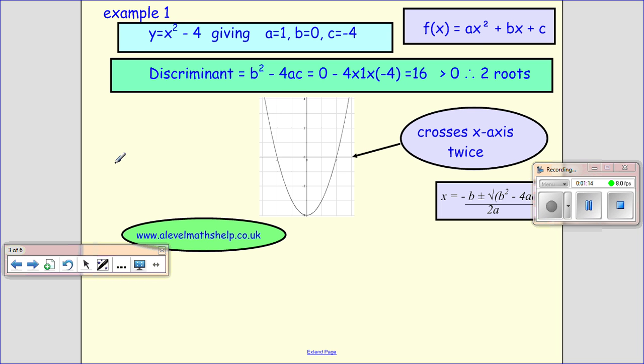Okay, so our first example, y = x² - 4. We compare it here with our quadratic function formula, and we have the values for a, b, and c. Then we slot those into our discriminant, which is b² - 4ac, plug all the numbers in, work it out,